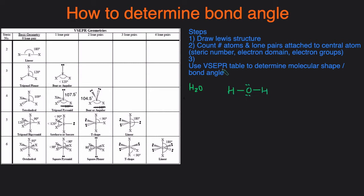Then the second step, we're gonna count the number of atoms and lone pairs attached to the middle atom. So the number of atoms will be one, two, and then the number of lone pairs will be three, four. So that means our steric number, which is what SN stands for, is gonna be four. By the way, steric number is also called the electron domain and the number of electron groups.